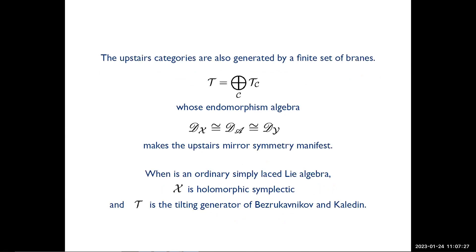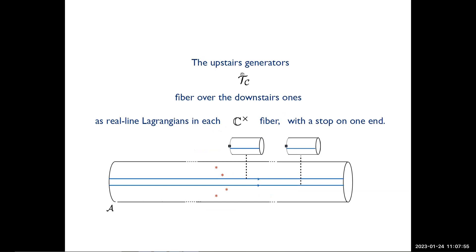The upstairs series categories are also generated by a finite set of branes whose endomorphism algebra makes the full upstairs mirror symmetry manifest. In particular, when our Lie algebra is the ordinary simply-laced Lie algebra, the upstairs X is holomorphic symplectic, and this generator is the tilting generator of Bezrukavnikov, Khovanov, and Kaledin. The upstairs generators fiber over downstairs ones as real-line Lagrangians, one in each C* fiber with a stop on one end.